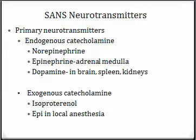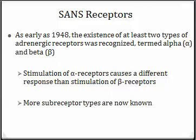The term catecholamine refers to the neurotransmitter's chemical structure. So norepinephrine, epinephrine, and dopamine are specific chemicals made by our body. There are other chemicals — like the epinephrine in a local anesthesia cartridge and isoproterenol — that have similar chemical structures, so they are catecholamines, but these chemicals are manufactured outside of our body, or exogenously.